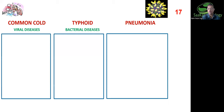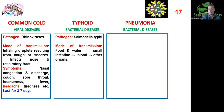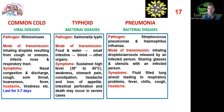Now let us compare three diseases with some similarities and differences. Common cold is caused by rhinovirus. Typhoid is caused by Salmonella typhi, a bacterium. Pneumonia is caused by Streptococcus pneumoniae or pneumococcus, a bacterium. For typhoid, transmission is through infected food or water. For pneumonia, it is through droplet infection. Symptoms include nasal congestion, running nose, cough, sore throat, fever, headache, and tiredness for common cold.